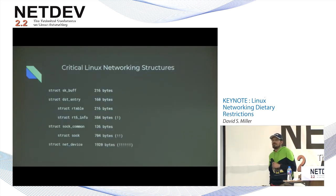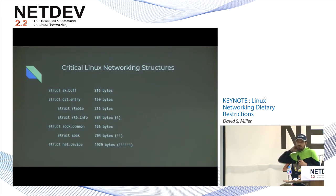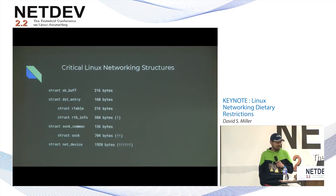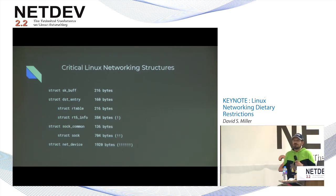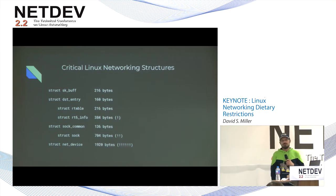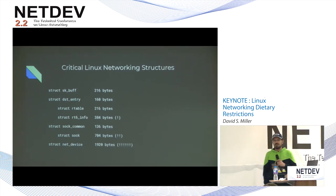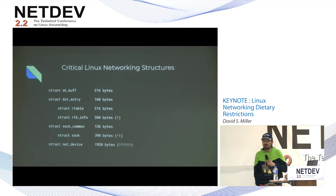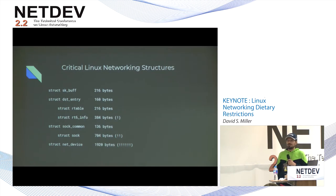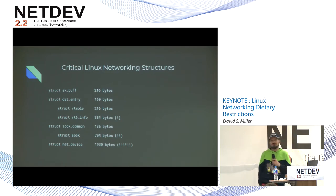Let's look at some critical Linux networking data structures in the tree. The first one is the packet metadata structure called sk_buff. It's about 216 bytes, and it heavily contributes to the transactional cost of every packet traversing through the networking stack. Any change to this structure, however minor, has enormous implications for performance and functionality in the kernel. You're going to have to do something really incredible to convince us to even add a bit to this structure — that's how critical it is.